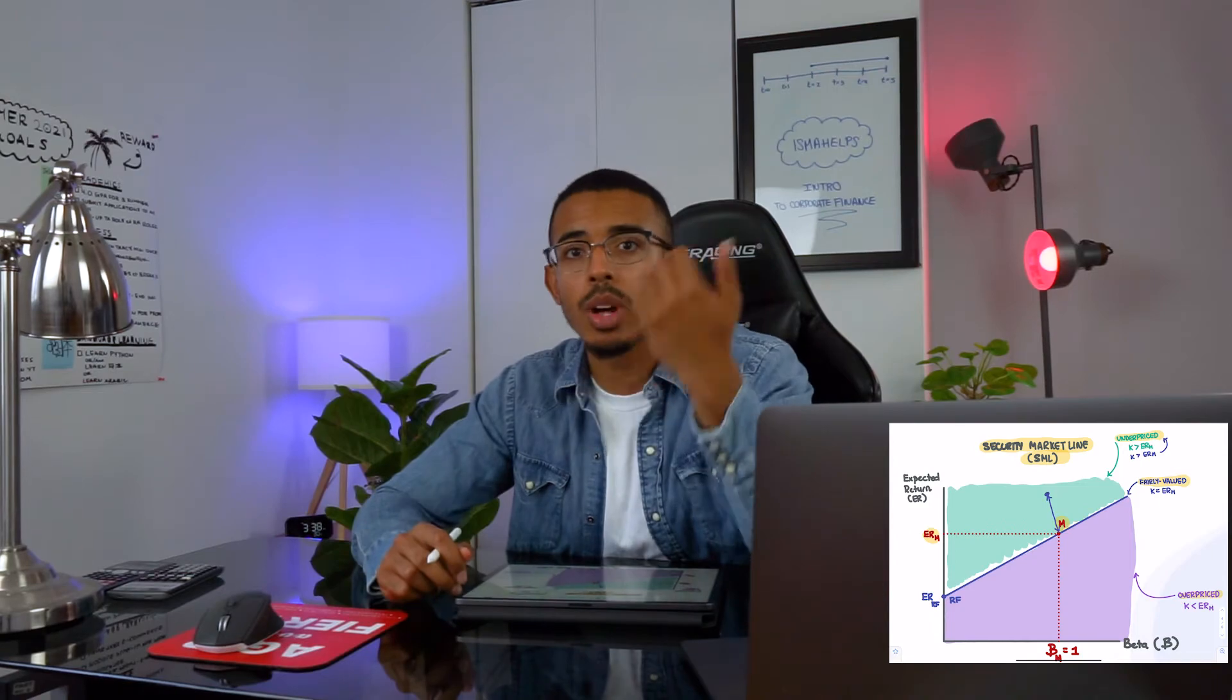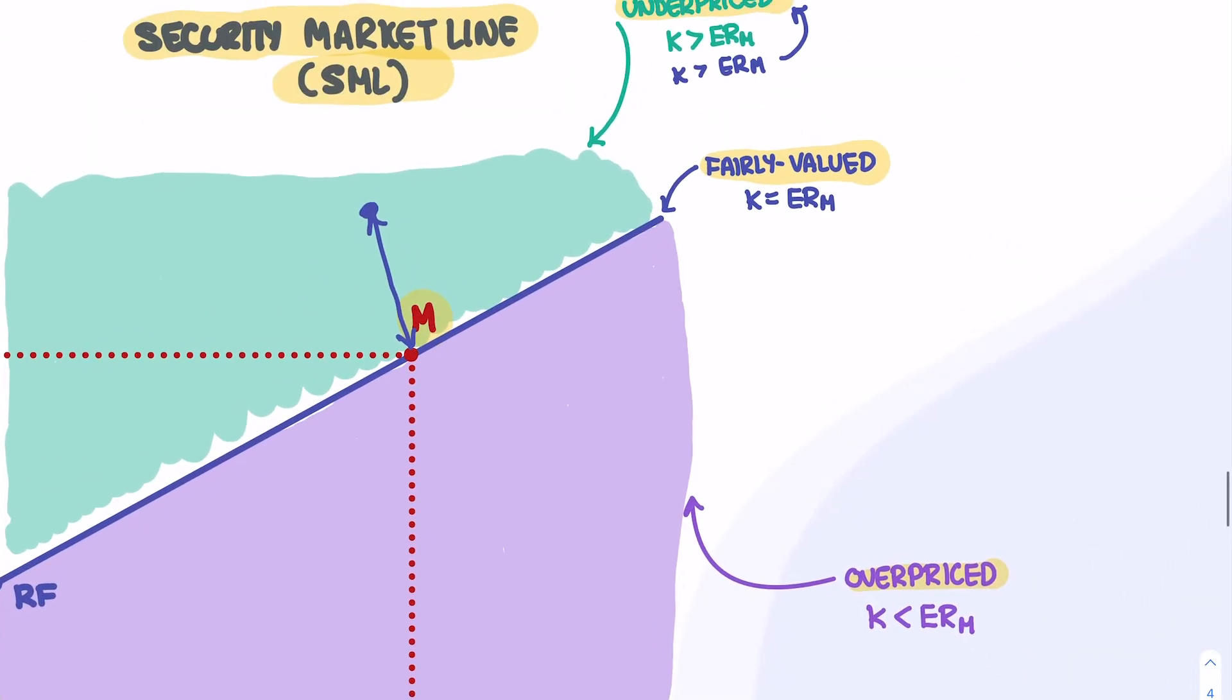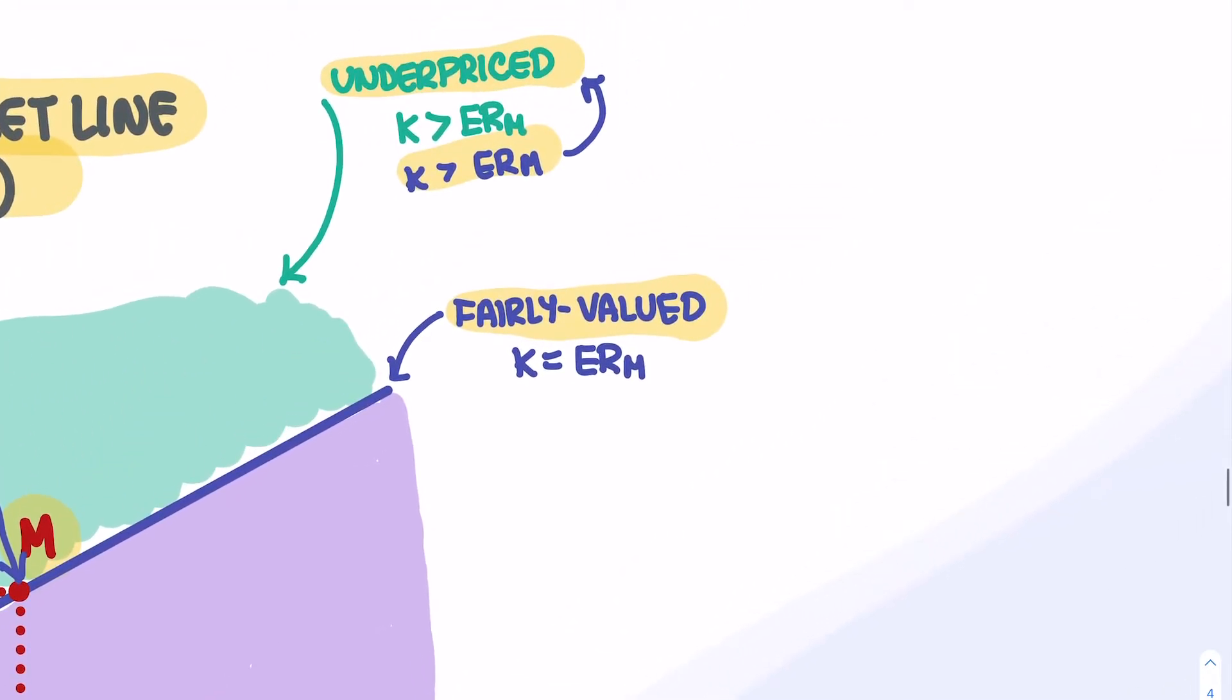When you think about this idea of something being underpriced or overpriced, or even fairly valued, people should not typically be compensated extra for a specific position. People should get exactly what the market expects a stock to give you. So if you get more than that, there's a problem. If K is bigger than ERM, then we have an underpriced stock.